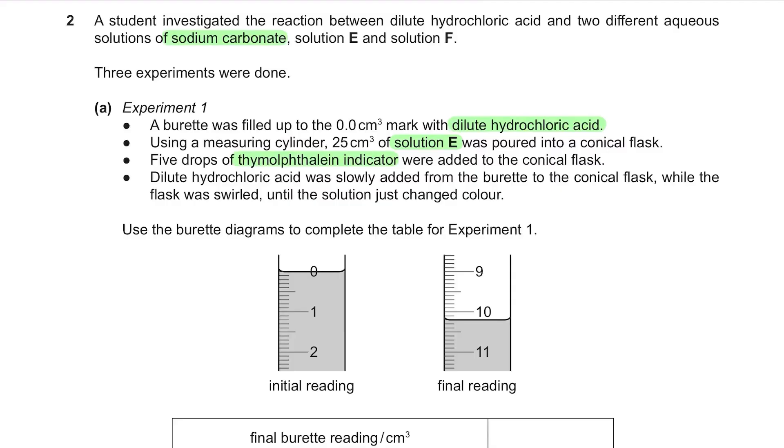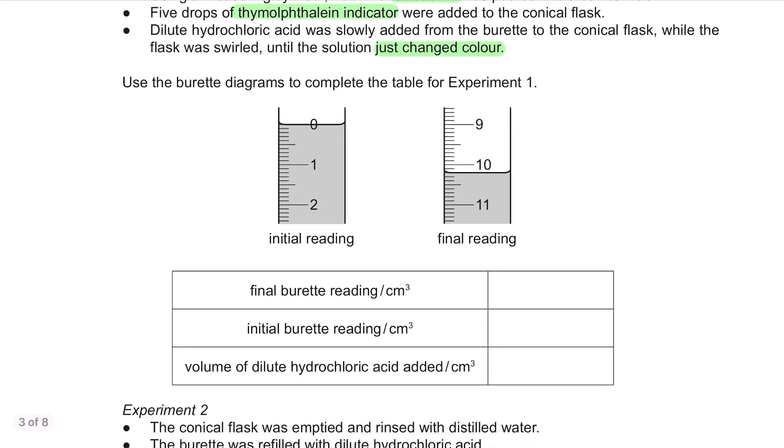Dilute hydrochloric acid was slowly added from the burette to the conical flask while the flask was swirled until the solution just changed colour. Use the burette diagrams to complete the table for experiment 1. Nothing difficult here, you just need to know how to read the burette. Final reading is here. Two blocks below 10 so it's 10.2 and the initial reading is 0.0. The volume added is 10.2.